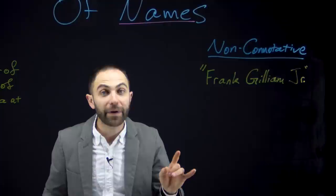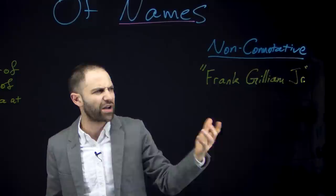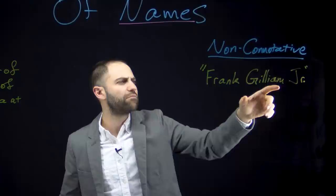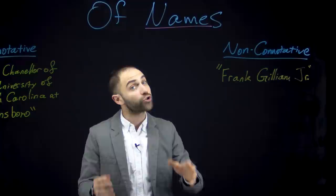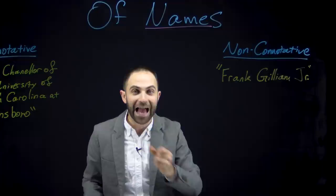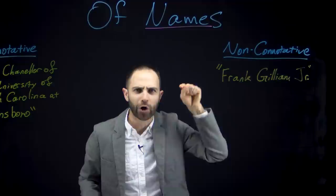You might say that a name like 'Frank Gilliam Jr.' — with 'junior' at the end — does communicate some information: that his father was named Frank Gilliam. But Mill can run the same Dartmouth argument here. If Frank Gilliam Jr. discovered that Frank Gilliam Sr. wasn't really his father, he could choose to change his name, but it wouldn't automatically happen that this would no longer be his name. That automatic cessation is exactly what happens with a definite description, but not with a proper name.